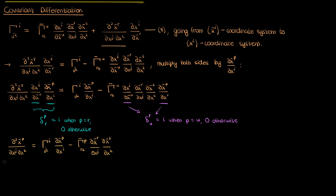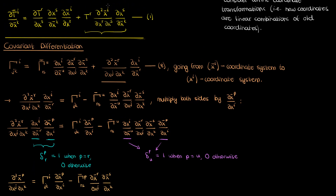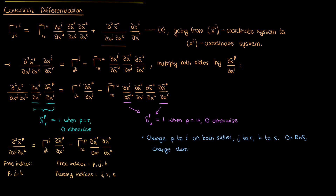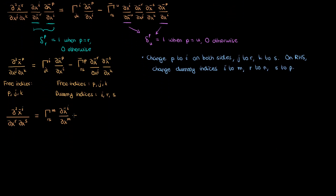Now let's do a tally of the indices on both sides. On the left we've got indices p, j, and k — all free indices that occur once in each term. On the right we've got p, j, and k as free indices, but also i, r, and s as dummy indices that are summed over. To make this equation consistent with the mixed partial in equation 1, I'll change free index p to i, j to r, and k to s — while simultaneously changing dummy index i to m, r to n, and s to p. When I do that I get this equation for the mixed partial derivative term.